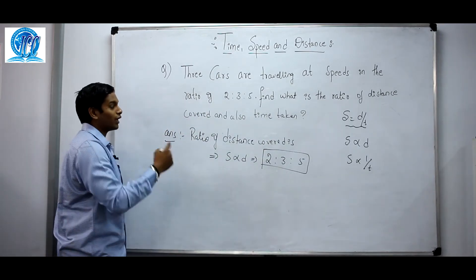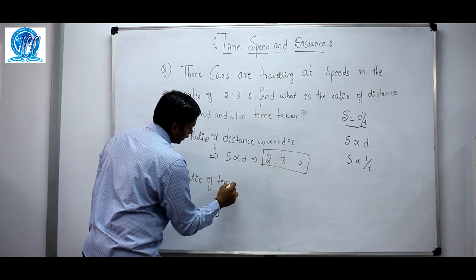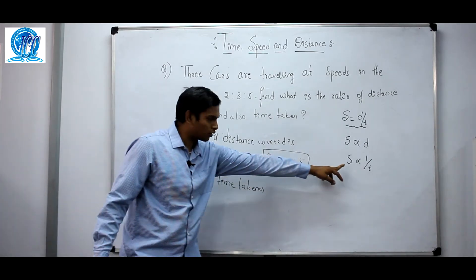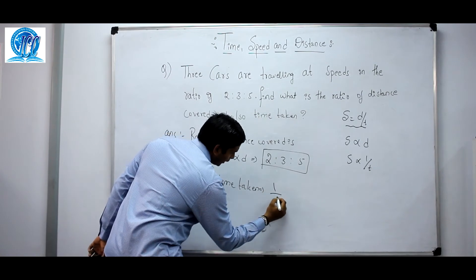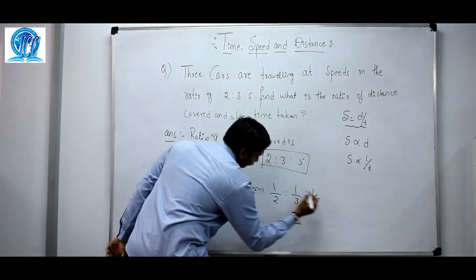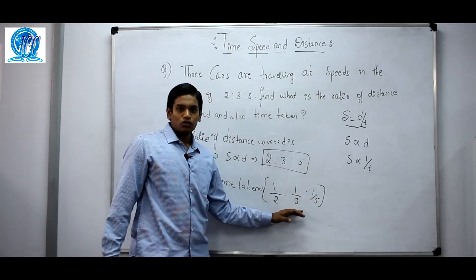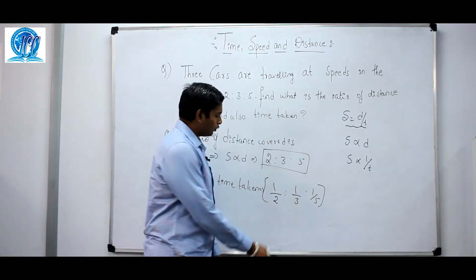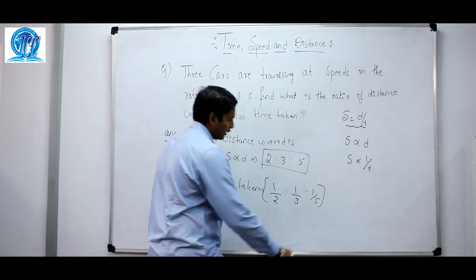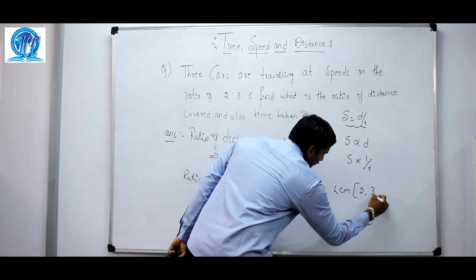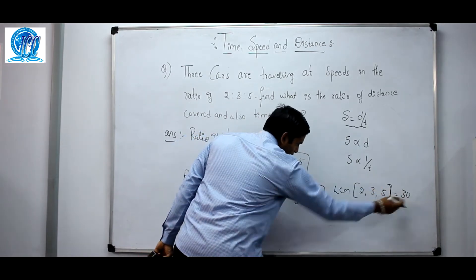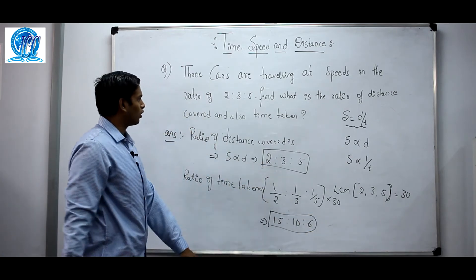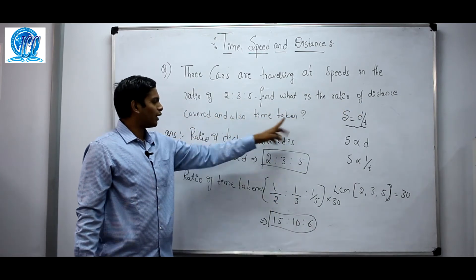For the ratio of time taken: since speed is inversely proportional to time, we take the reciprocal of the speed ratio. The reciprocals are 1/2, 1/3, and 1/5. To express these without fractions, we find the LCM of 2, 3, and 5, which is 30. Multiplying through by 30 gives us the ratio of time taken as 15:10:6. So the ratio of distance covered is 2:3:5 and the ratio of time taken is 15:10:6.